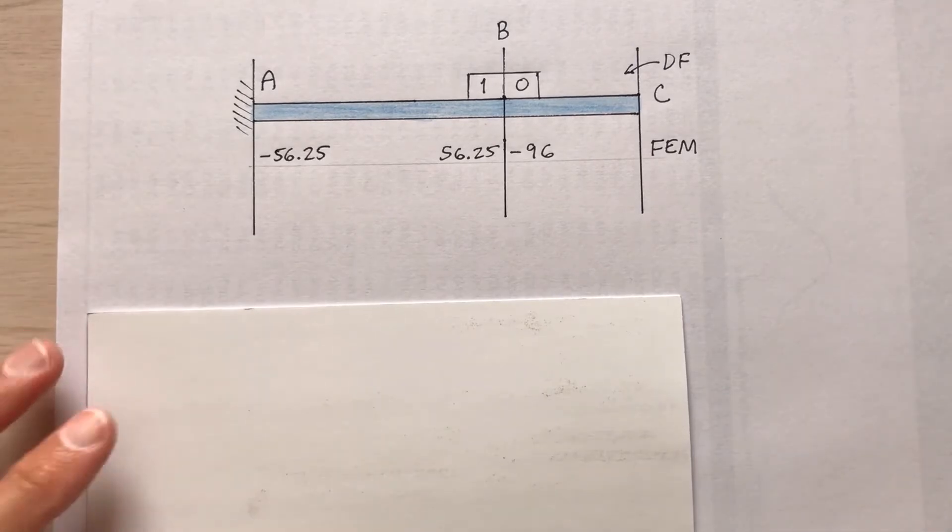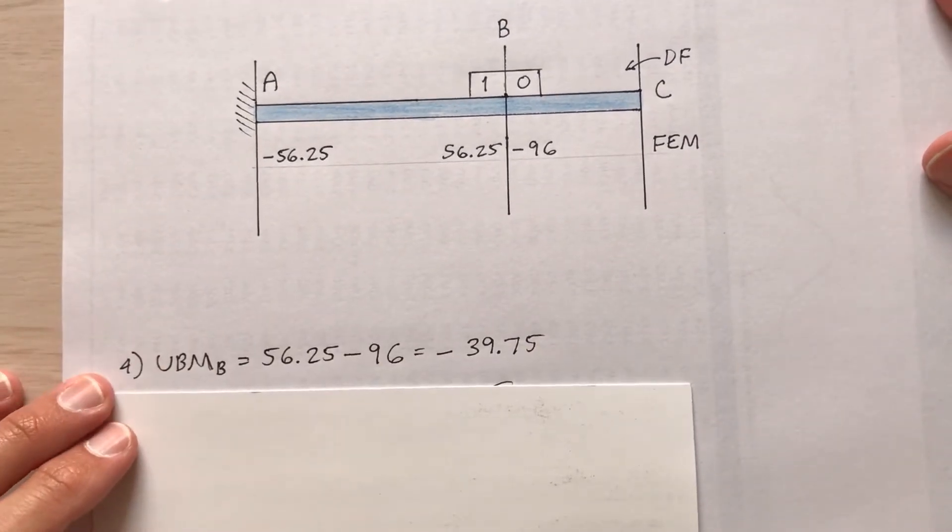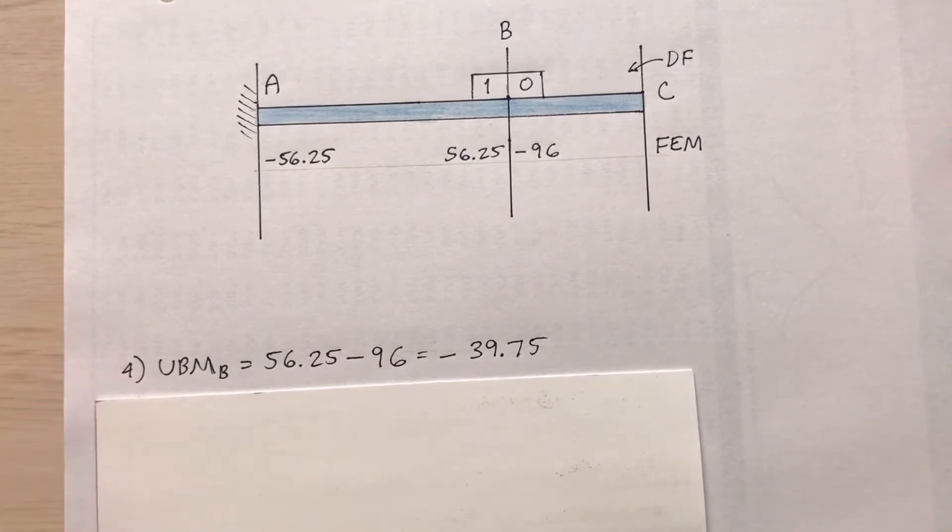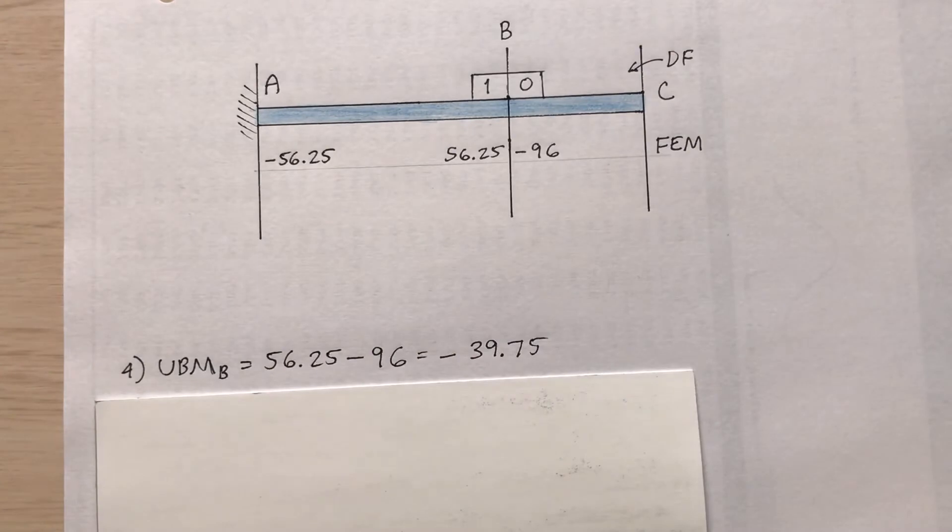Step four, the unbalanced moment at B. 56.25 minus 96. What is that? Negative 39.75.